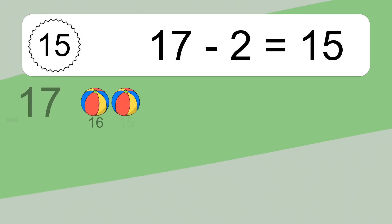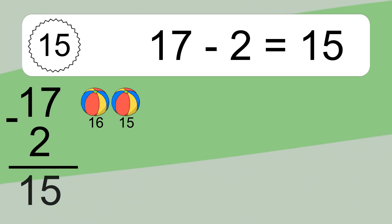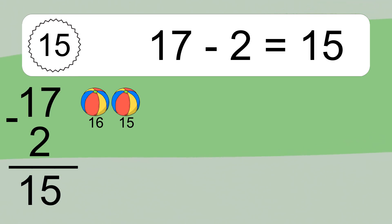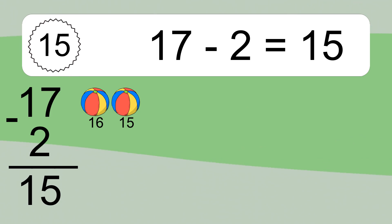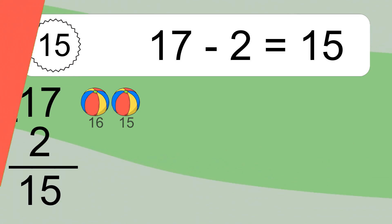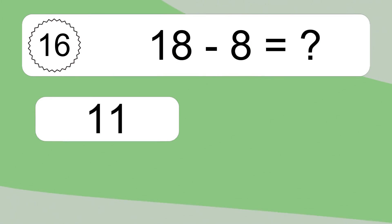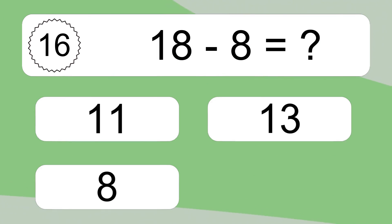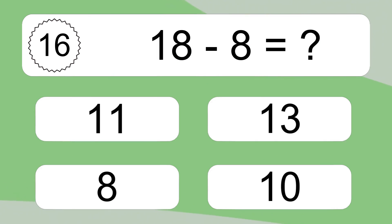17 minus 2 equals what? 17 minus 2 equals 15. Let's count it: 16, 15.